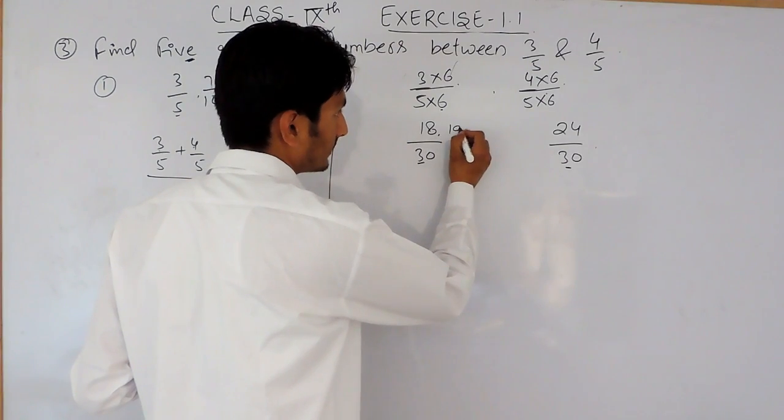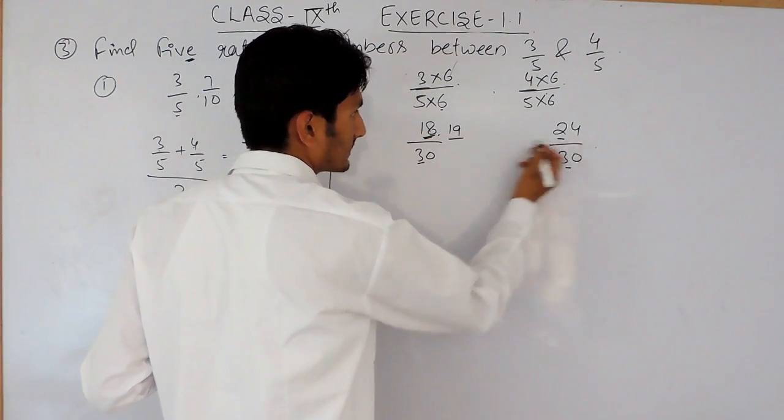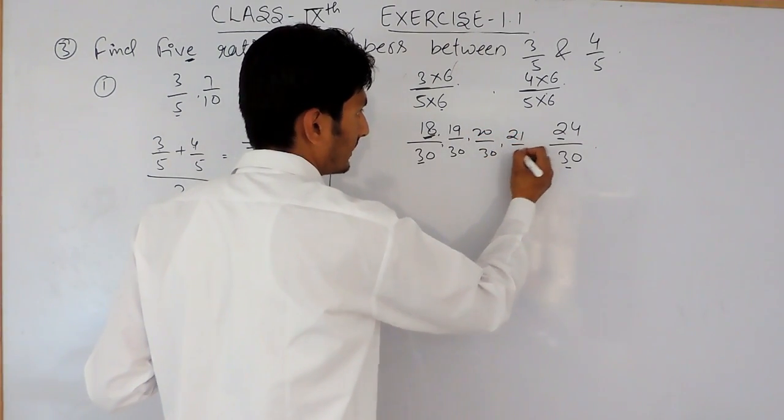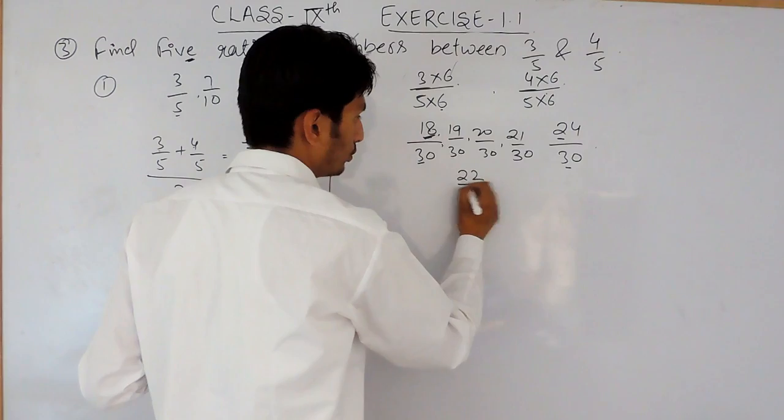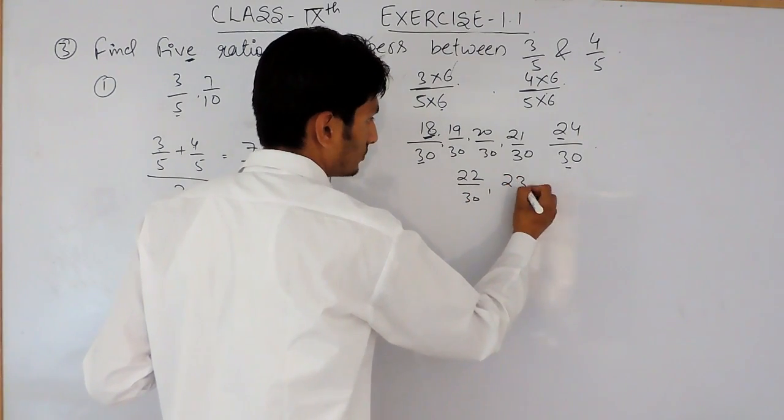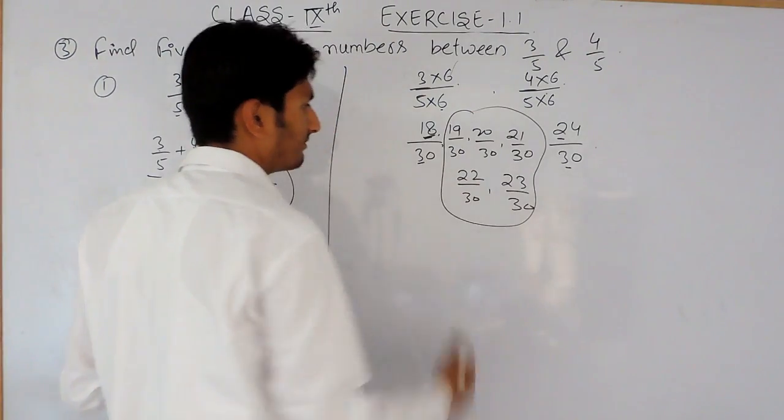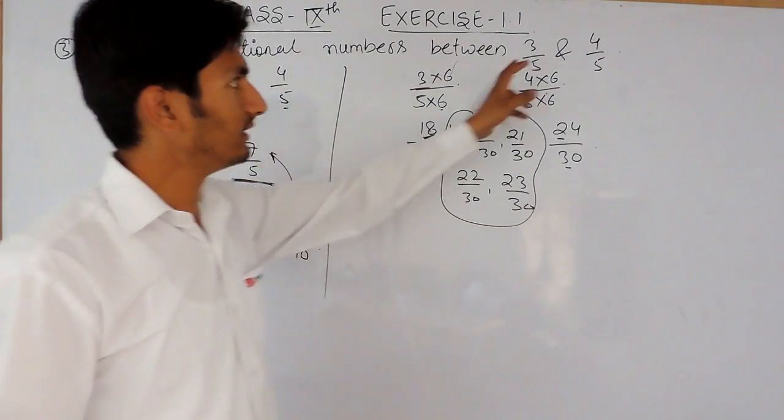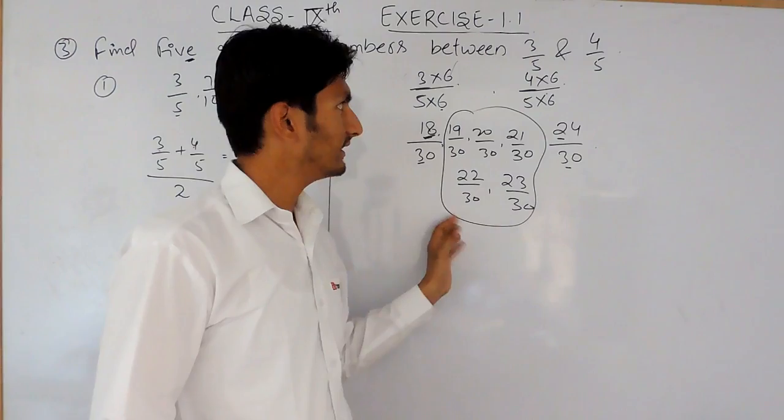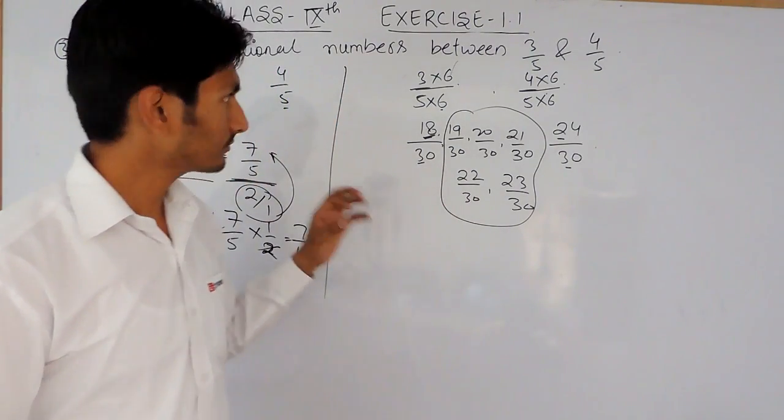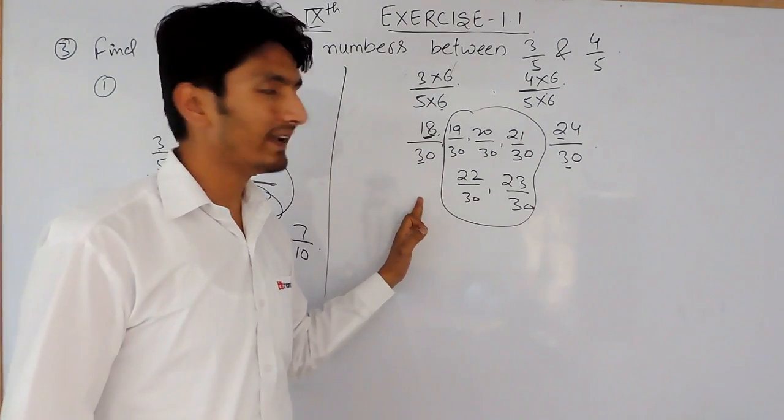So the base is same and the numbers between this and this are 19 upon 30, 20 upon 30, 21 upon 30, 22 upon 30, 23 upon 30. So these will be the 5 rational numbers between these two. Obviously this will be the smaller method or the easy one, so it is better to solve it by this method.